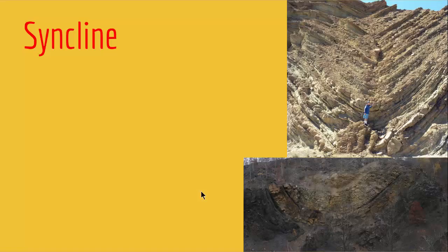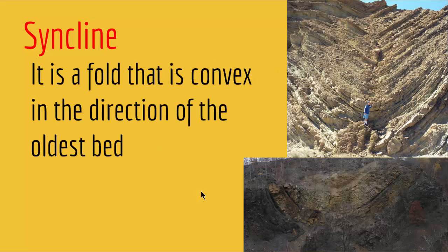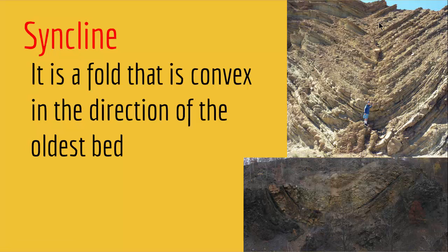Another type of folding is called a syncline. A syncline is a fold that is convex in the direction of the oldest bed. Just like you see here, the oldest bed lies in the ground, and since we have a convex in the direction of the oldest bed, we have a syncline. Keep in mind that if this structure gets overturned — meaning your youngest bed is at the bottom and your oldest bed goes on top — you still have a syncline even though the shape looks like an anticline or anti-form.